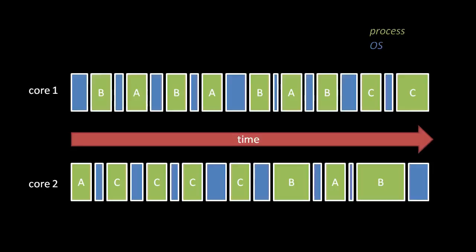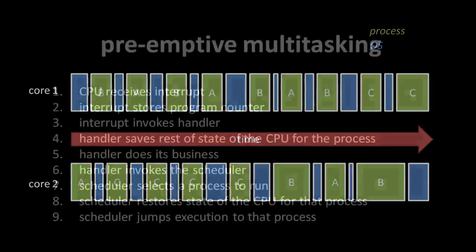Left on its own, a running process would continue indefinitely. When any hardware interrupt is triggered, however, the interrupt handler passes off control to the scheduler rather than handing the processor core back to the interrupted process. The scheduler then decides what OS code to run, if any, and what process should run next.